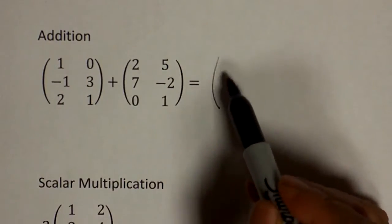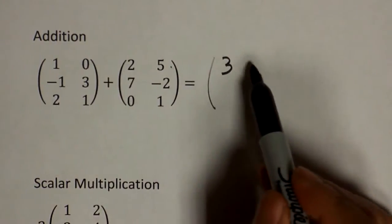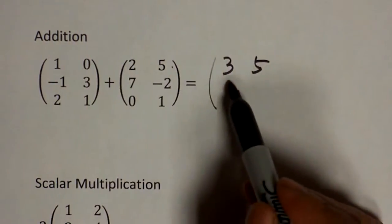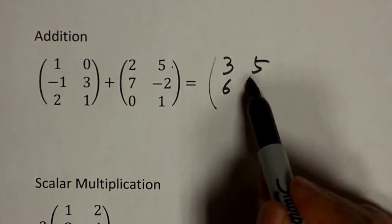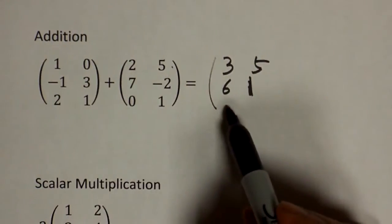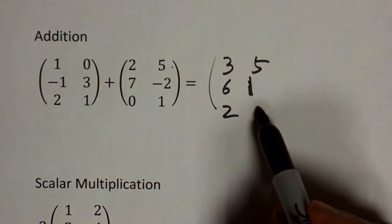So you have one plus two, which is three. Zero plus five is five. Negative one plus seven is six. Three plus negative two is just a positive one. Two plus zero is two. One plus one is two.